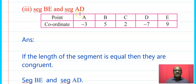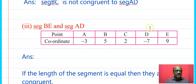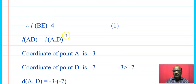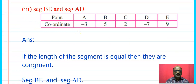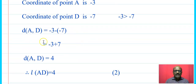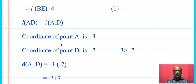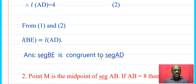Next, segment BE and segment AD. Coordinate of B is 5, E is 9; distance BE = 9 - 5 = 4. For AD: coordinate of A is -3, D is -7; distance AD = -3 - (-7) = -3 + 7 = 4. Length BE = 4 and length AD = 4, therefore segment BE is congruent to segment AD.